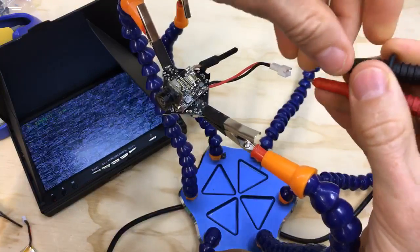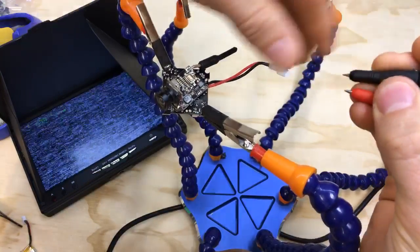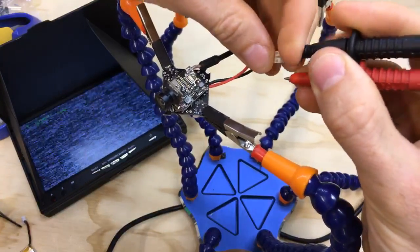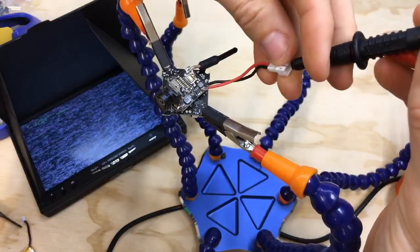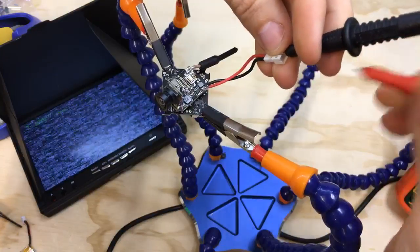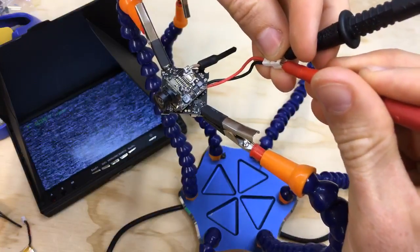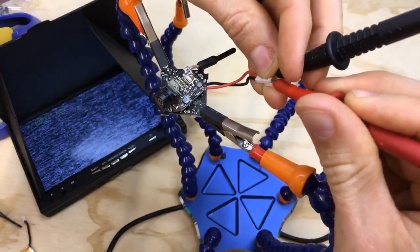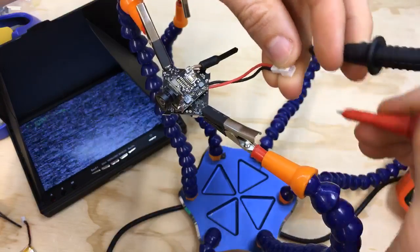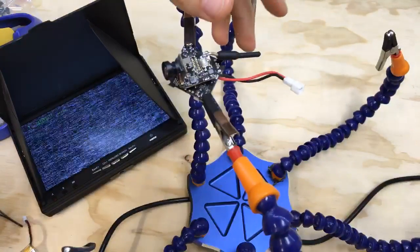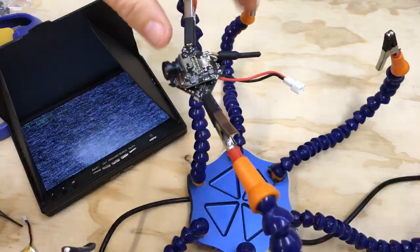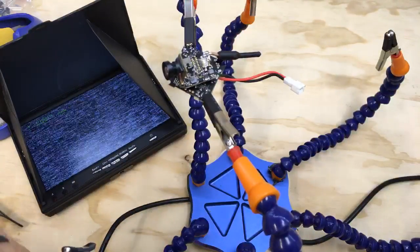But if it beeps, that means I have a short somewhere and I need to look more closely at the solder joints to see where I bridged it. It's just a really simple sanity check. All right, so I'm touching both there, no beeping. That means that I don't have any bridges, so that's always just a good thing to check before you plug in and accidentally burn out a component.